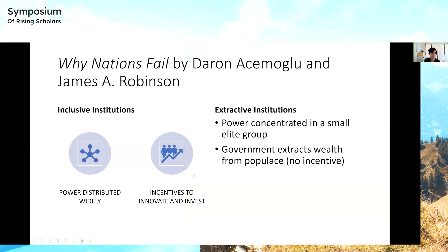We can start with Why Nations Fail by Daron Acemoglu and James A. Robinson. The main idea behind their theory is that civilizational decline is predominantly a function of institutions. This book covers decline from a political and economic perspective. The crux of their argument is that there's a distinction between inclusive and extractive institutions.